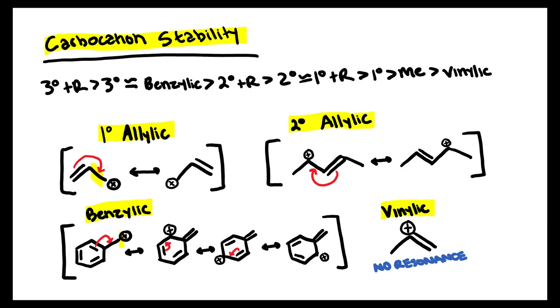However, for vinylic, the carbocation is directly on top of the double bond and is going to be very unstable.